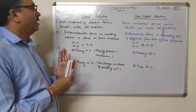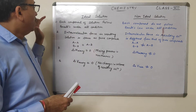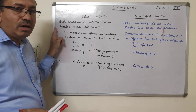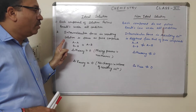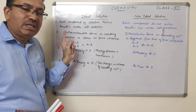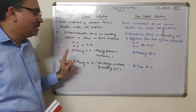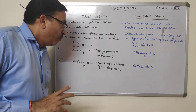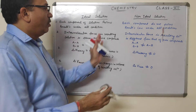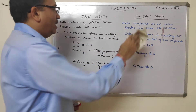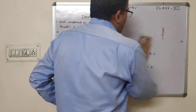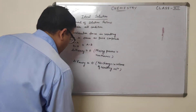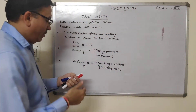So these four points are: ideal solutions follow Raoult's law under all conditions; intermolecular force in the resulting solution is the same as pure components; ΔH mixing is zero; and ΔV mixing is zero. Now, for ideal solutions, let me explain it in a graphical form.